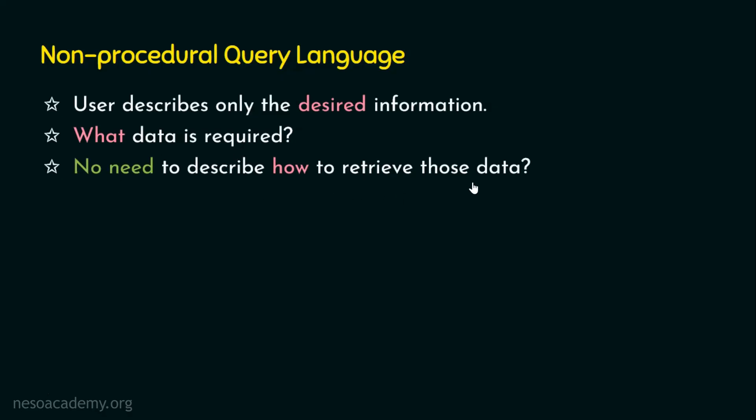This language is like X in the analogy — we just mentioned 'we need coffee,' that's it. So non-procedural query language is like X in the analogy. The example for non-procedural query language is relational calculus, which has two types: tuple relational calculus and domain relational calculus. In relational calculus, we just say what data is required without explicitly saying how to retrieve it.